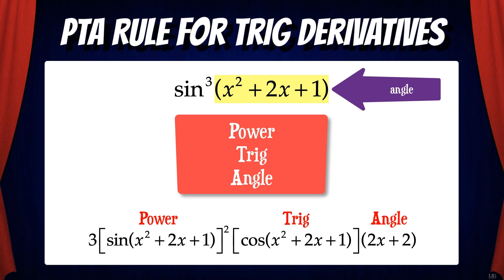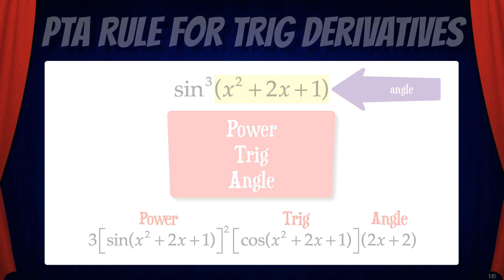Note that I'm referring to "angle" as the inside of a trig function because a trig function takes in an angle as its argument — you might remember sine theta, cosine theta, etc. from trigonometry class. Here, x²+2x+1 is that inside part; that's the angle.